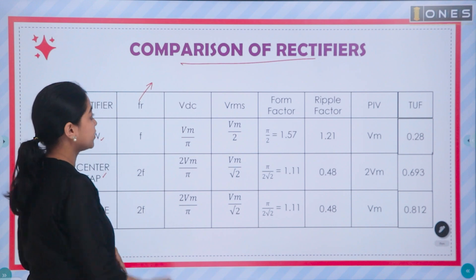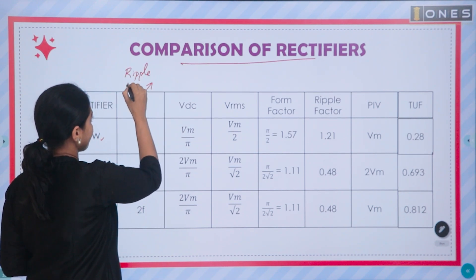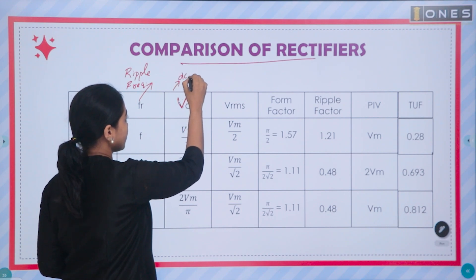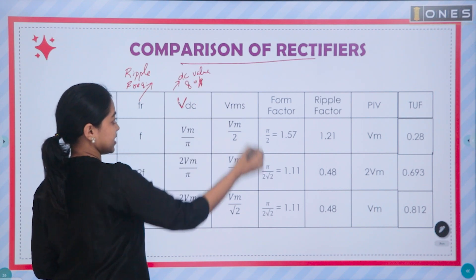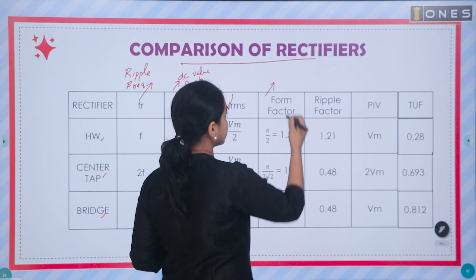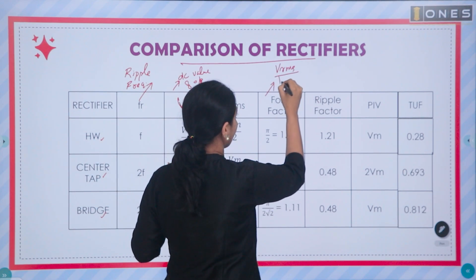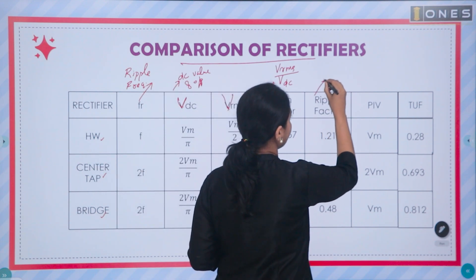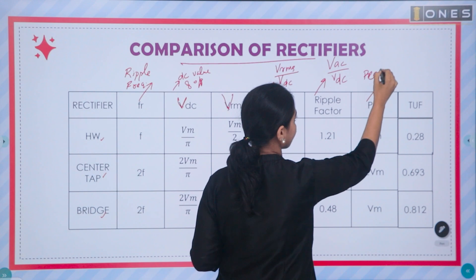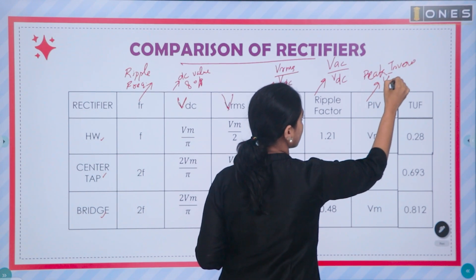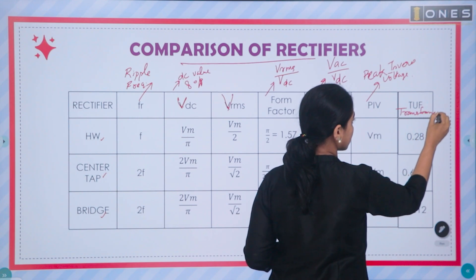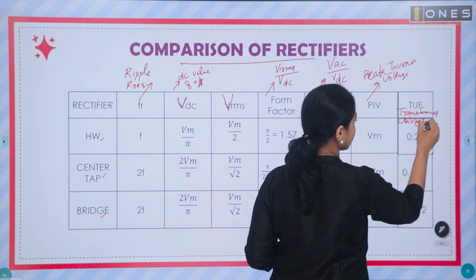The ripple frequency is denoted FR. VDC is the DC value of the output signal. VRMS is the RMS value of the output. The form factor is VRMS divided by VDC. The ripple factor is VAC divided by VDC. Peak inverse voltage (PIV) is the maximum voltage that the diode can withstand under the reverse biased condition. And TUF is the transformer utilization factor.